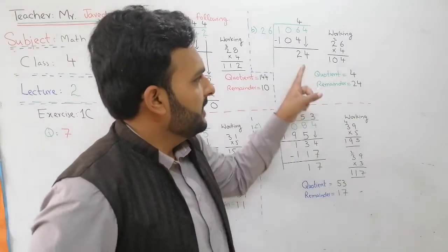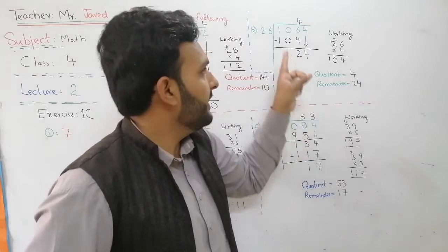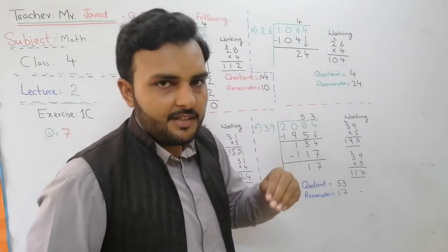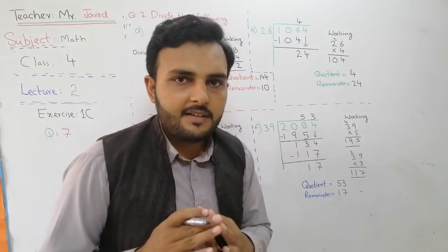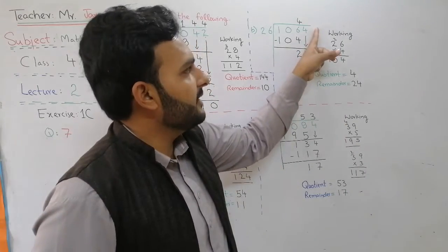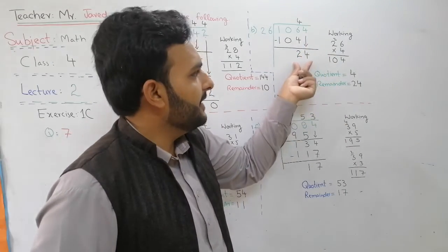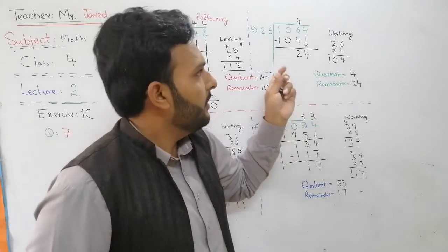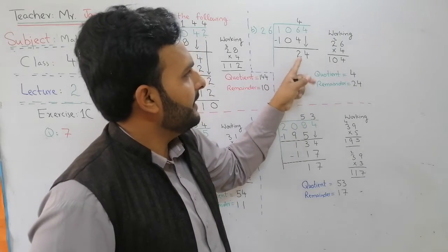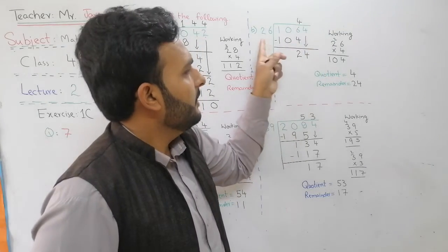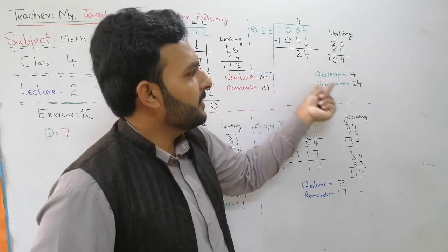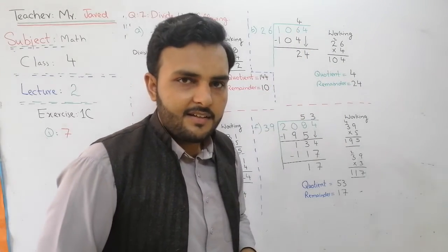So students, look at that, 24 is less than divisor 26. So this is not going to divide. So this is the remainder. And this is the remainder. And the quotient is 4. Clear?